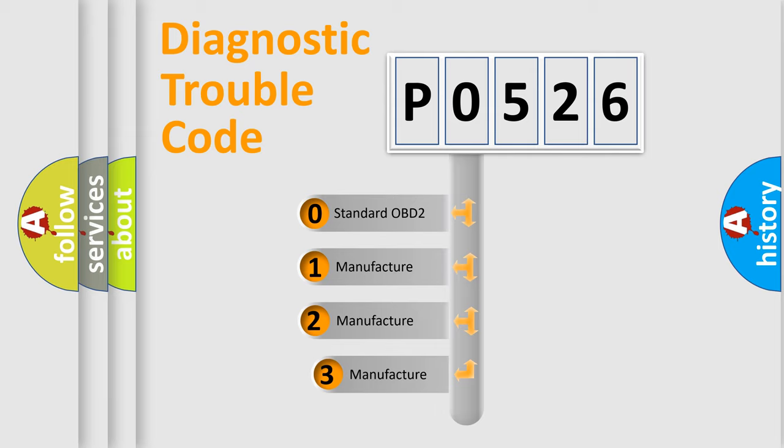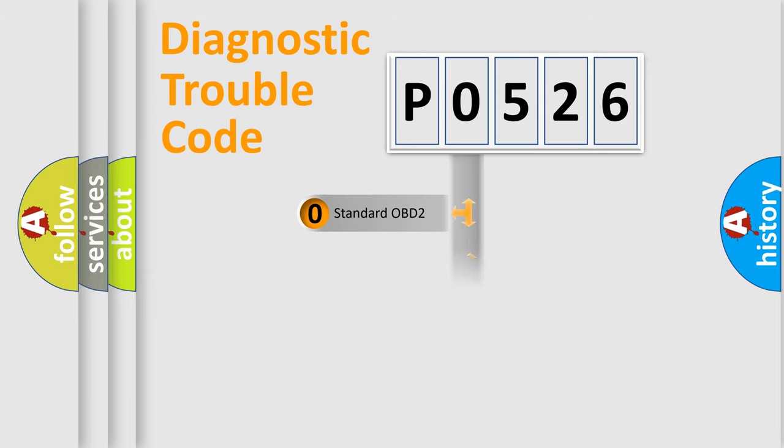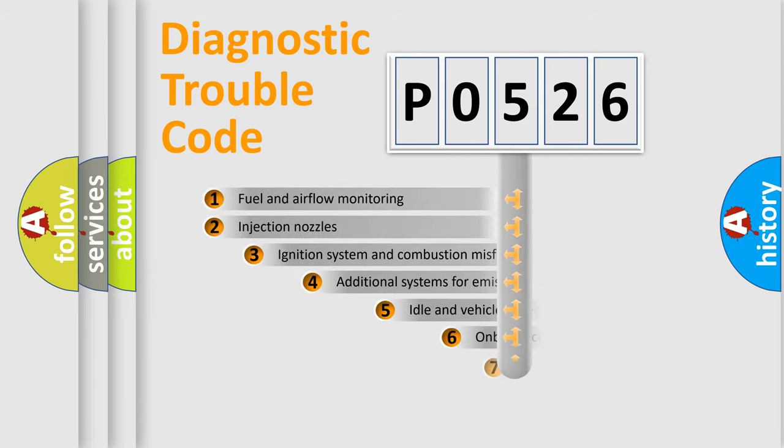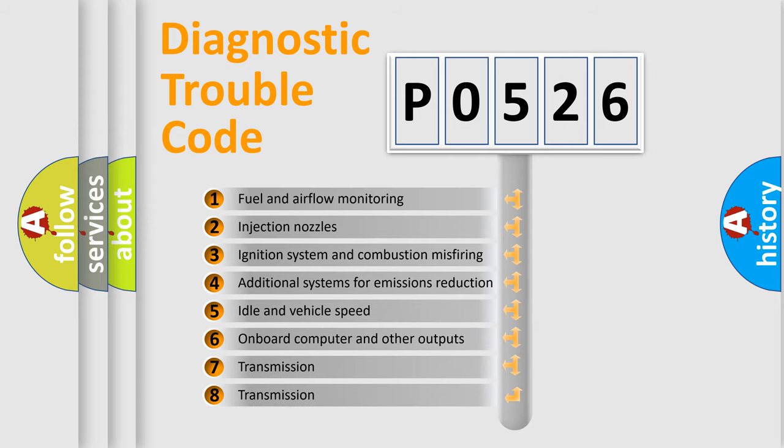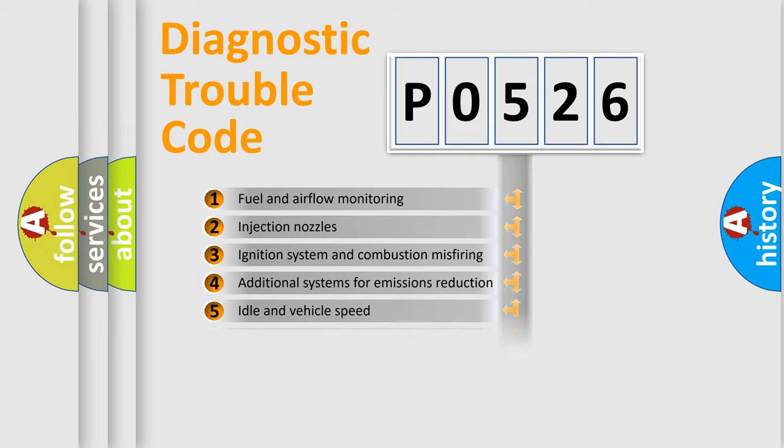If the second character is expressed as zero, it is a standardized error. In the case of numbers 1, 2, or 3, it is a more precise expression of the car-specific error. The third character specifies a subset of errors. The distribution shown is valid only for the standardized DTC code.